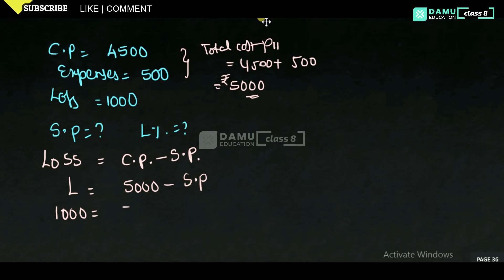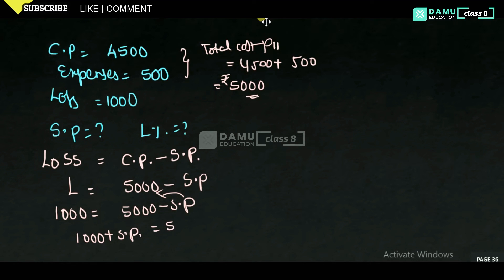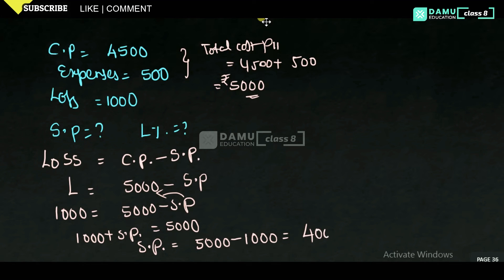So 1000 is equal to 5000 minus SP. If we shift SP to the left side, it becomes 1000 plus SP equals 5000. Therefore SP equals 5000 minus 1000, which gives us 4000 rupees. So selling price is 4000 rupees.